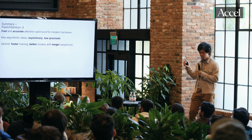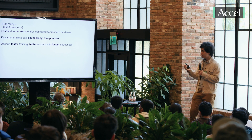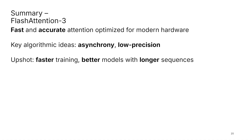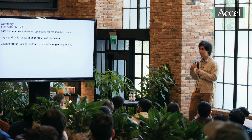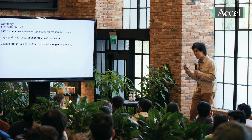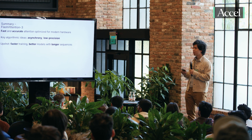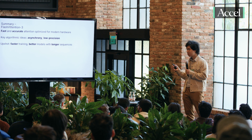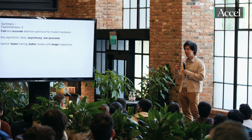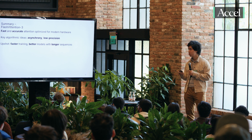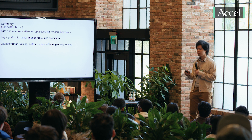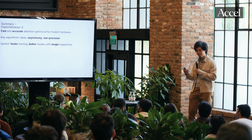Flash Attention 3 is a fast and accurate attention optimized for modern hardware like Hopper. We'll continue working on other hardware — AMD GPU, TPU, and Blackwell is coming, I'm really excited for that. Two key ideas: one is asynchrony, and one is low precision. The upshot is you can get faster training and better models with longer sequences. Thanks so much for your attention.